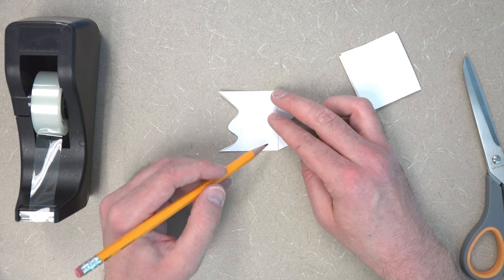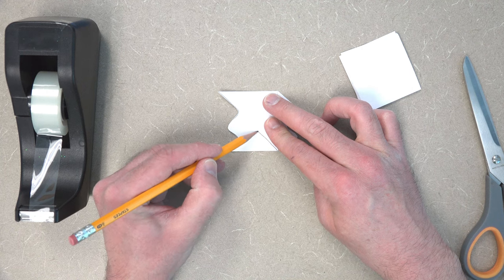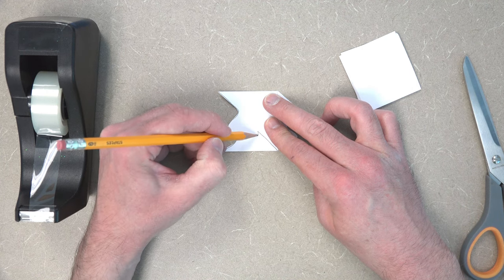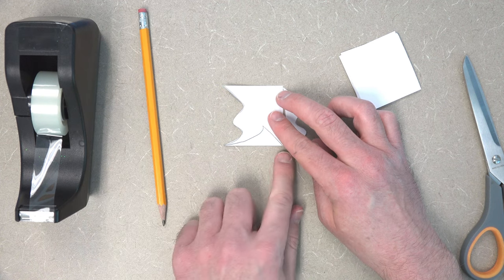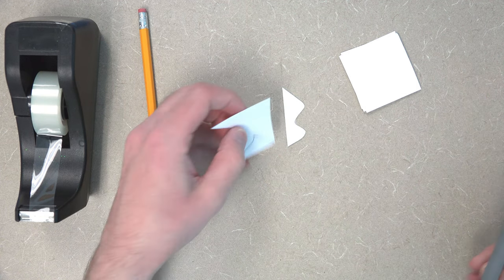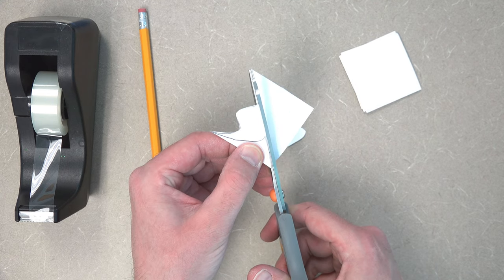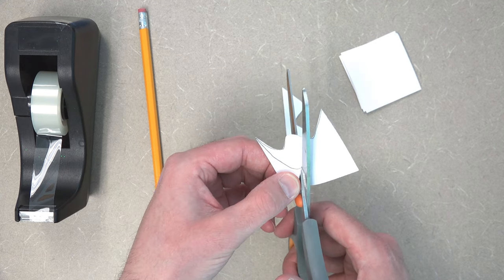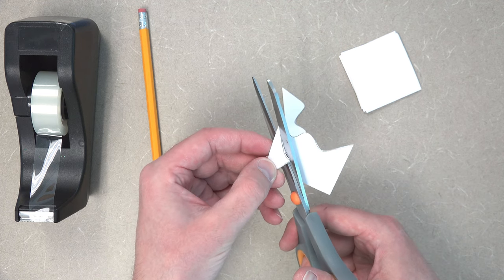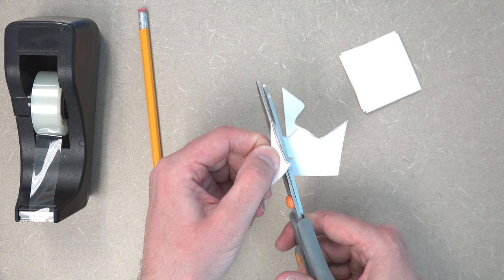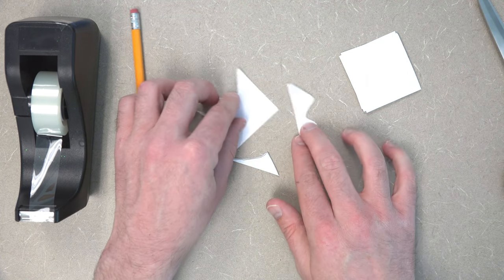And then once you finish that, go ahead and pick another side. I'm going to start on the bottom and draw another simple shape. Again, moving from the corners of the square, so we have a nice repetition. All right, then we cut it out. Just follow the line best you can, corner to corner. There we go.